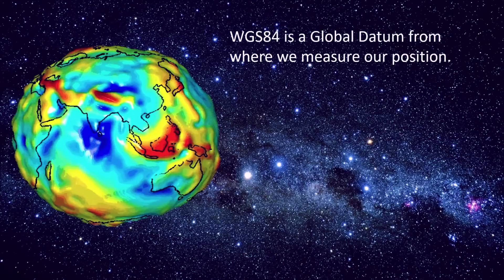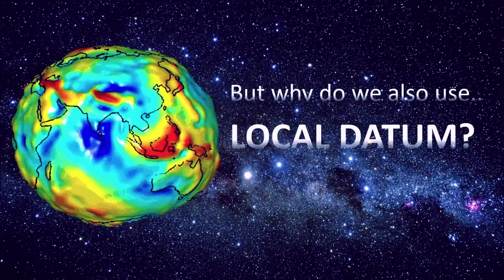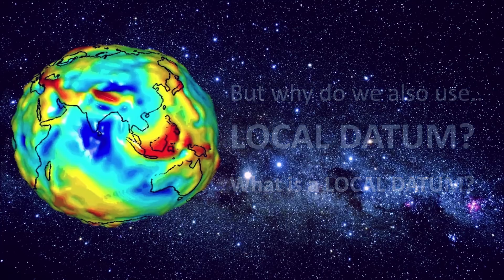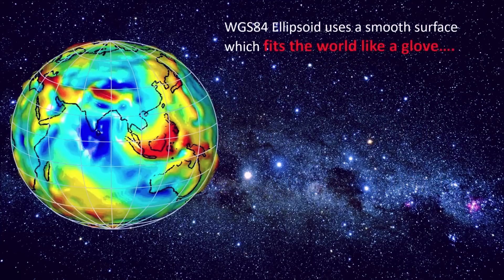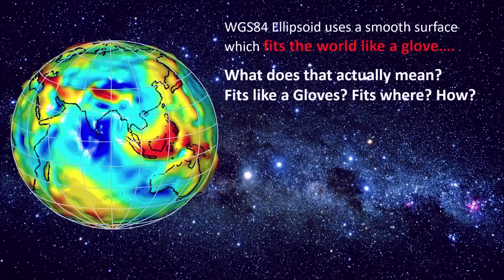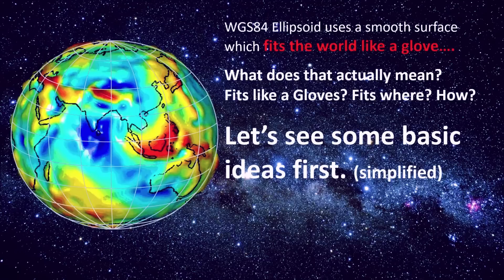WGS-84 is a global datum from where we measure our positions, but why do we also use local datum and what is a local datum? WGS-84 ellipsoid uses a smooth surface which fits the world like a glove. But what does that actually mean - fits like a glove, fits where, how? Let's see some of the basic ideas first, shall we?